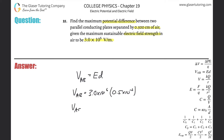Simply now just plug that in. We have 3 times 10 to the 6, multiplied by 0.5 times 10 to the minus 2, and we get about 15,000. So two sig figs, I'll just leave it at 15,000. And that's in terms of volts.